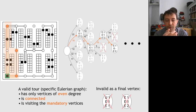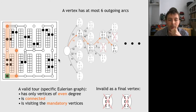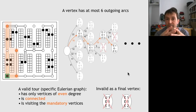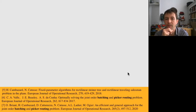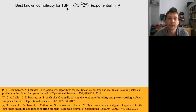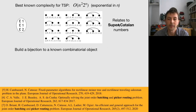A valid tour has only vertices of even degree and one single connected component. Notice that a vertex in this graph has at most six outgoing arcs, with the bound given by the number of vertical transitions. What really matters to compute the size of this graph is the number of vertices — the number of equivalence classes. This is how we establish the complexity: we build a bijection to a non-combinatorial object, relating to what are called the super-Catalan numbers.